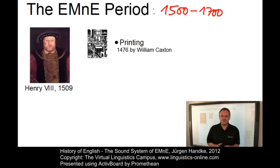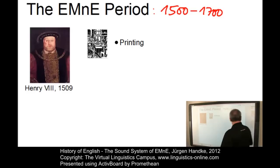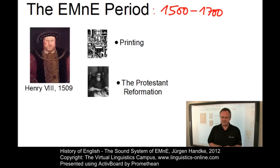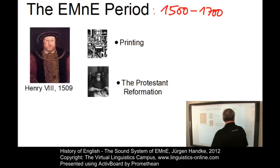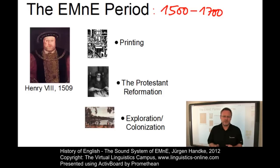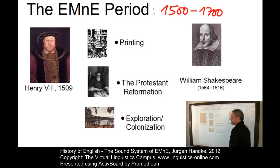This helped to fix the literary language of England in the 16th century. Another milestone is the gradual break from Rome by Henry VIII, which led to a higher degree of independence of the English language from other languages. The end of the Early Modern English period coincides with the Age of Exploration and Colonization and the beginning of the Scientific Age at around 1700. And then there is, of course, most influentially, the works of William Shakespeare.